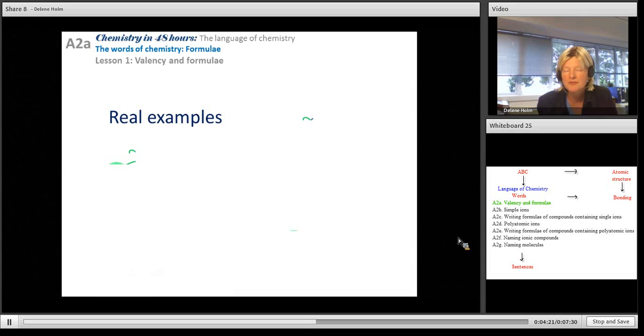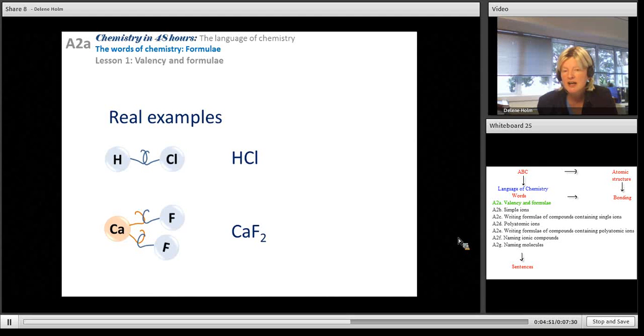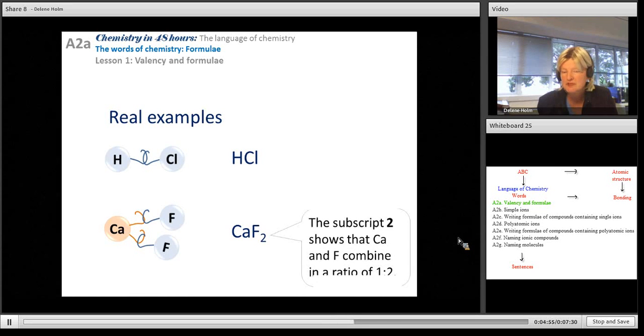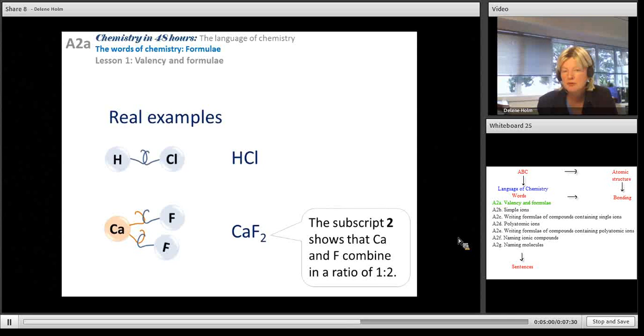Let's look at some real examples. Hydrogen is in Group 1 so has a valency of 1. Chlorine is in Group 17, 18 subtract 17 is 1. So they will combine in a 1 is to 1 ratio, so its formula is HCl. We don't write any ones. If I have calcium, Group 2 valency of 2, with fluorine in Group 17, I'm going to need two fluorines for every 1 calcium. We write that ratio number as a subscript. Notice we didn't write the 1 for calcium. We never write ones.